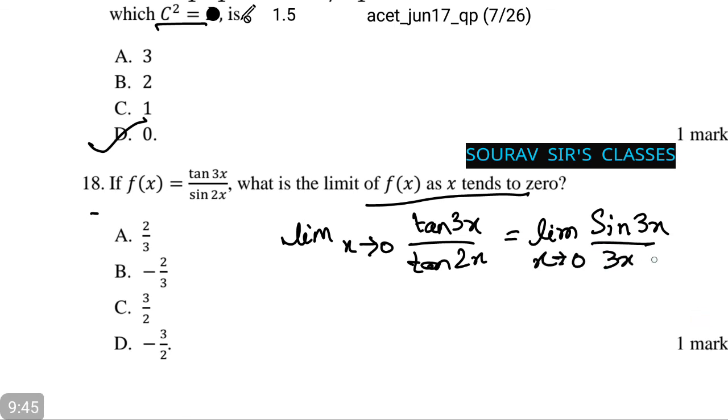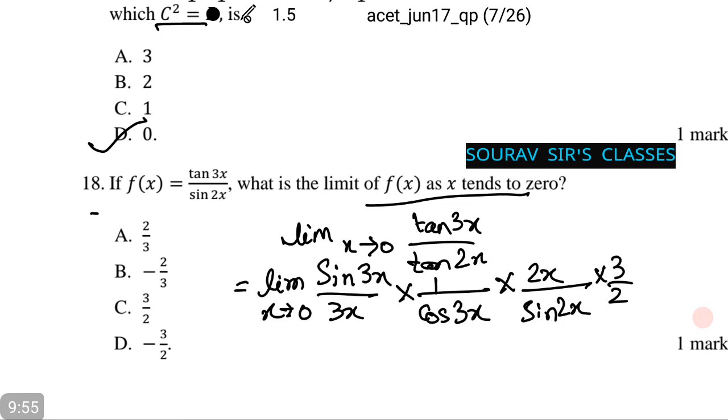I will do this down below so that you can see the full equation. This is what the equation will come. Now upon further calculation we find the value of this is 3 by 2, which corresponds with option number C.